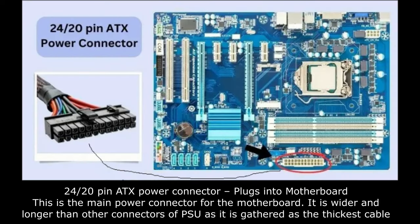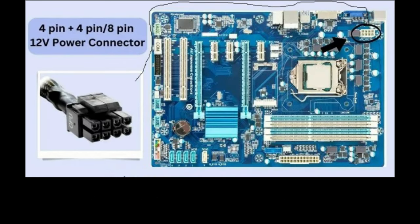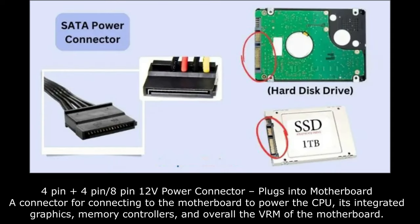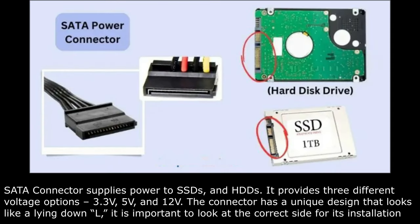The 24 or 20 pin ATX power connector plugs into the motherboard. This is the main power connector for the motherboard — it is wider and longer than other connectors of the PSU as it is the thickest cable. The 4 pin plus 4 pin / 8 pin 12 volt power connector also plugs into the motherboard as a connector for powering the CPU, its integrated graphics, memory controllers, and overall the VRM of the motherboard.